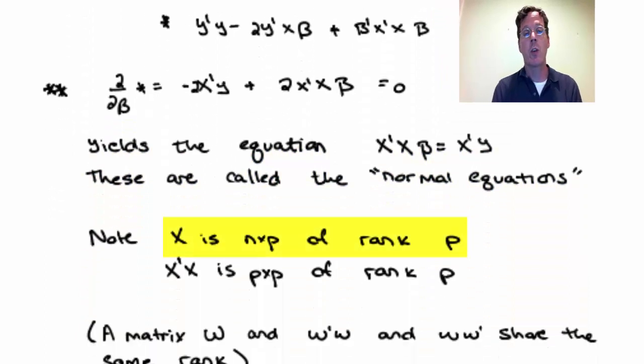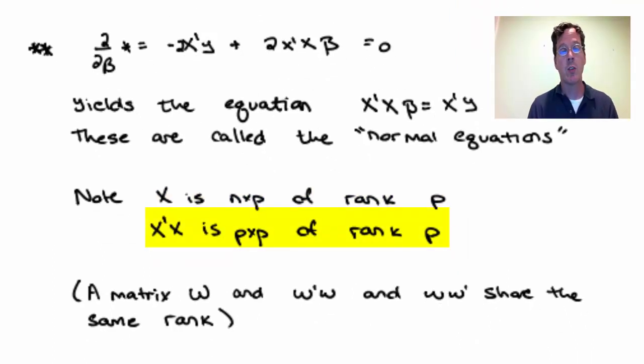Just to remember, x is of dimension n by P and it's of rank P. There's a matrix algebra result that says x transpose x and xx transpose all have the same rank as x. In this case, we're interested in x transpose x. It is a P by P matrix of rank P, so it is invertible.